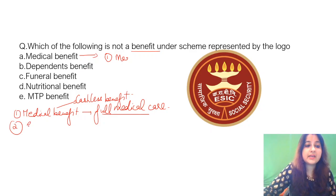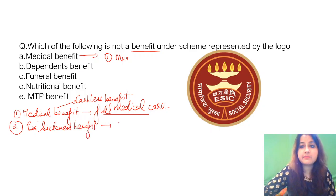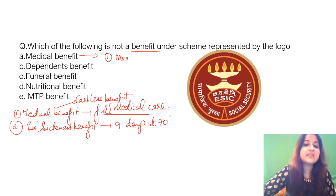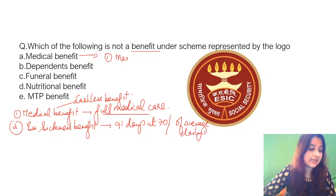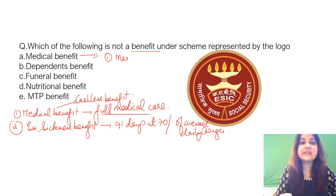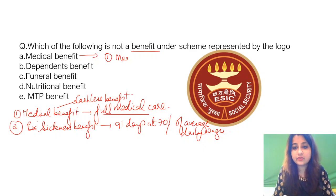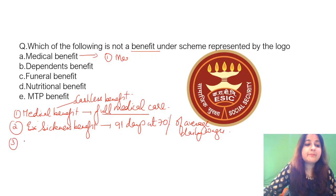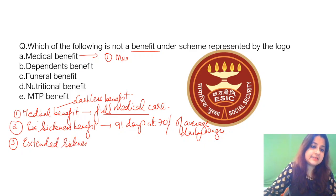The next very important benefit is sickness benefit. Sickness benefit is provided for 91 days at 70% of average daily wages. This has to be taken within any continuous period of 365 days — you cannot split it arbitrarily. Then we have extended sickness benefit.